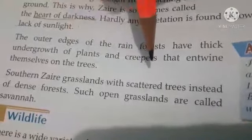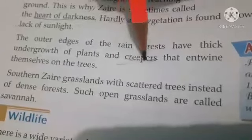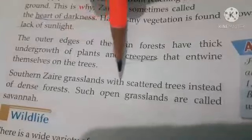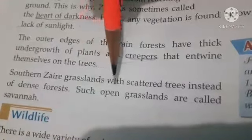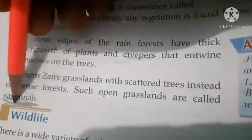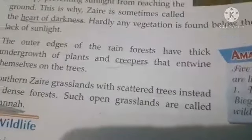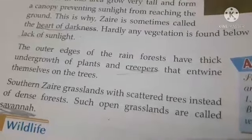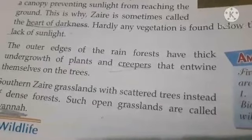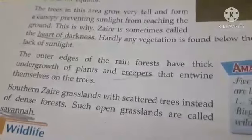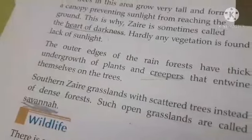The outer edges of the rainforest have thick undergrowth of plants and creepers that wind themselves up on the trees. In southern Zaire, there are grasslands with scattered trees instead of dense forest. Such open grasslands are called savannah. Next topic, wildlife, we will discuss in the next video lecture. Your homework is to read about the climate of northern and southern Zaire from your book.